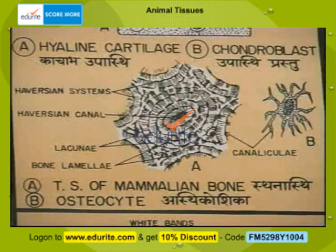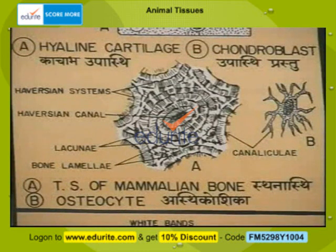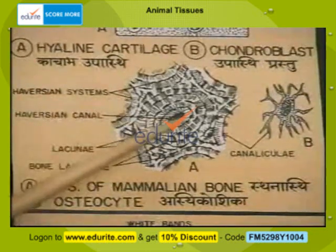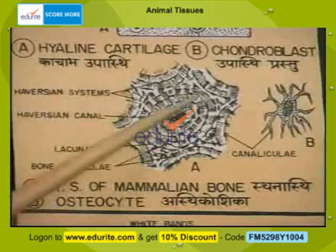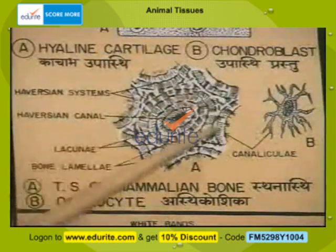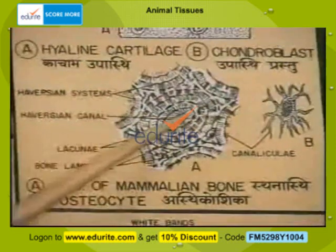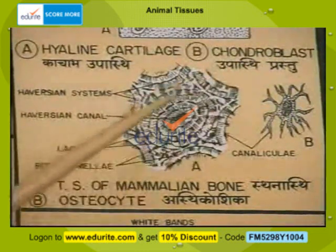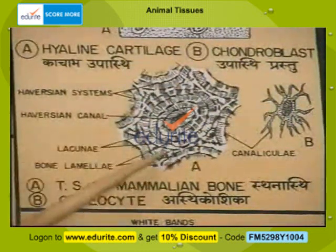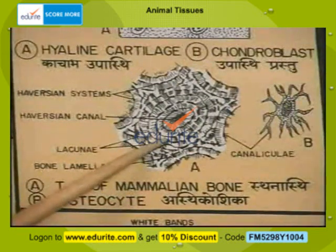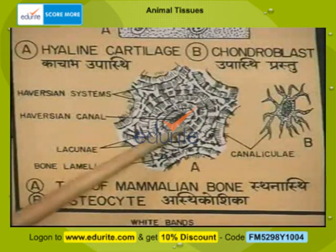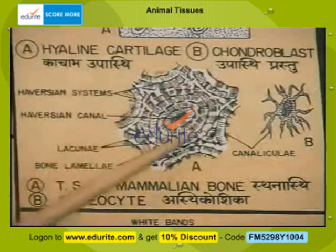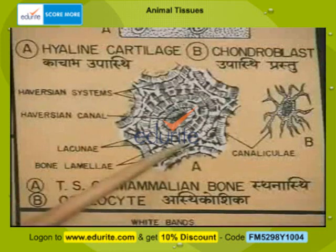Bone is another kind of connective tissue. This is a specialized kind of connective tissue which consists of bone cells arranged in concentric circles around a space called the Haversian canal. The matrix here also contains deposits of a mineral usually made of calcium and phosphorus salts. Bone is part of the endoskeleton of all vertebrates.